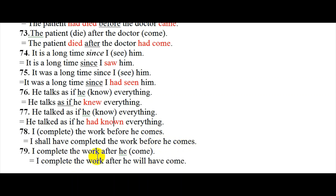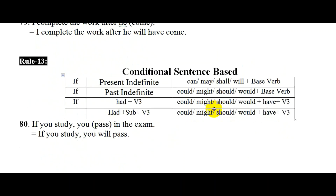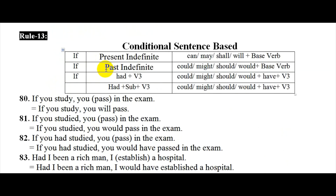After he comes — will have plus V3. Since he comes — will have plus V3. Conditional sentence: present tense plus can, may, shall, will plus V3. Will have plus V3 is used in the present tense context. If you study it in the present tense with indefinite tense, you can write it as the present tense, as it is a true sentence.